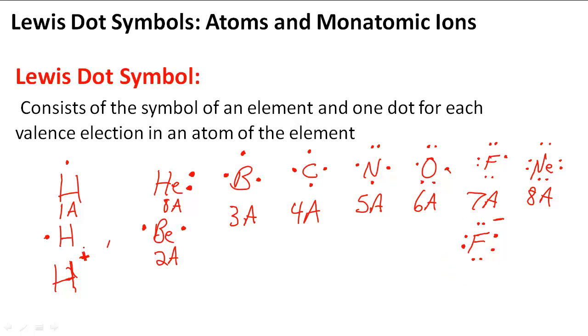And here it has lost an electron, so I put a positive, so it's a cation. And here are the three different types of symbols for a cation, an anion, and a regular element.